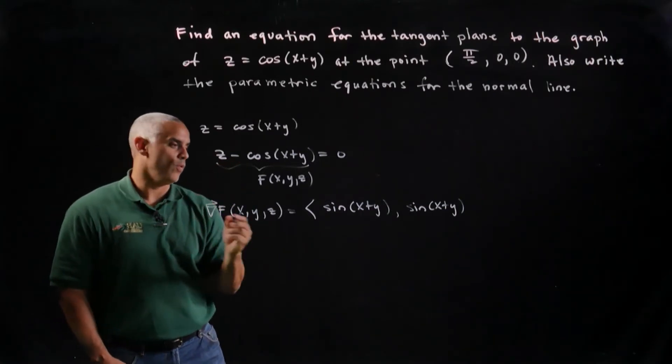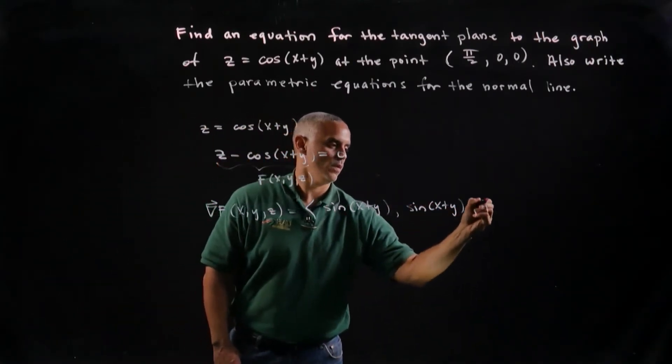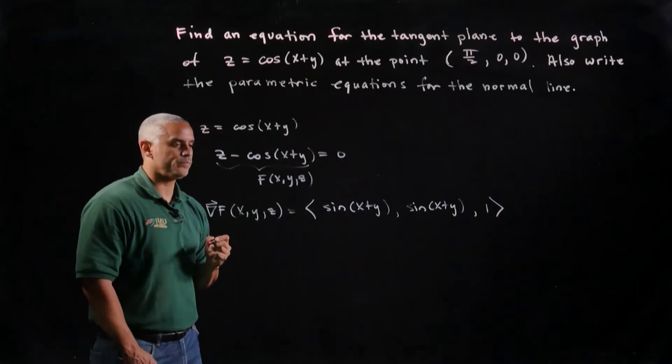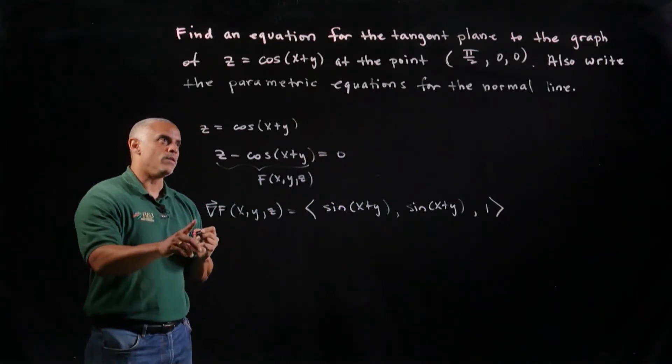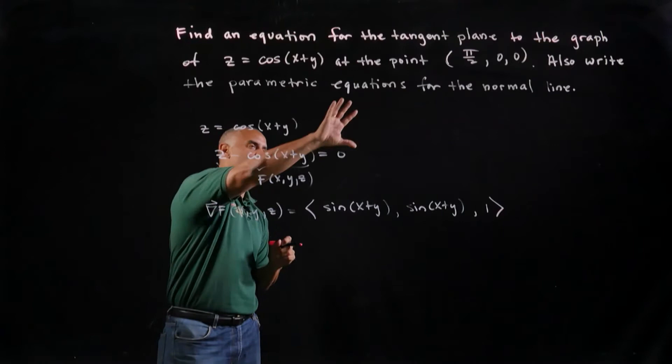And now the partial with respect to z, of course, is simply 1. So now this is a master function at all x, y, z.